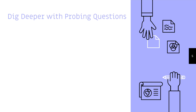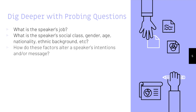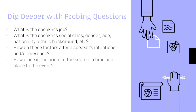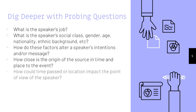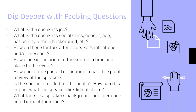Here are some examples: What is the speaker's job? What is the speaker's social class, gender, age, nationality, ethnic background, etc.? How do these factors alter a speaker's intentions and/or message? How close is the origin of the source in time and place to the event? How could time past or location impact the point of view of the speaker? Is this source intended for the public? How can this impact what the speaker did or did not share? What facts in a speaker's background or experience could impact their tone?